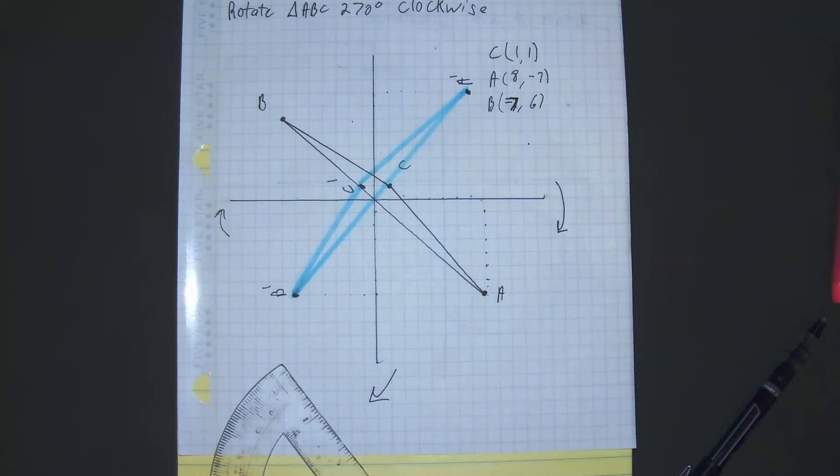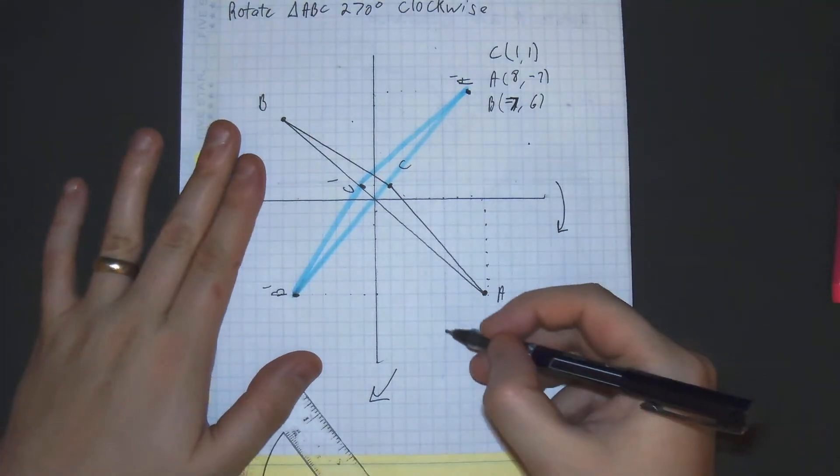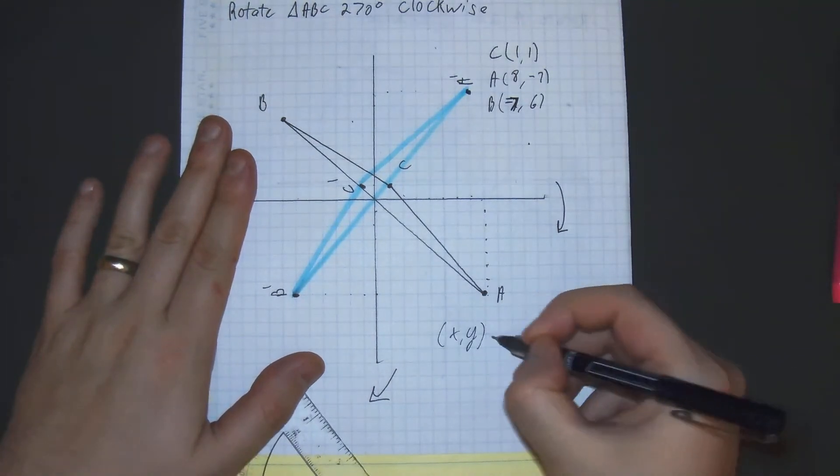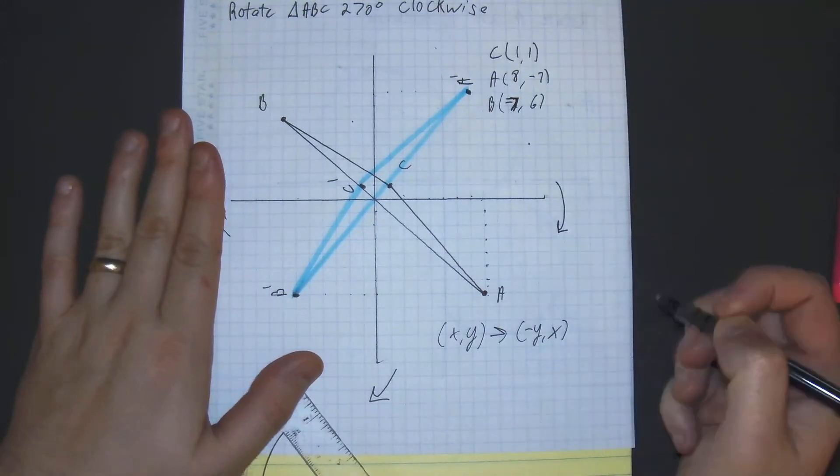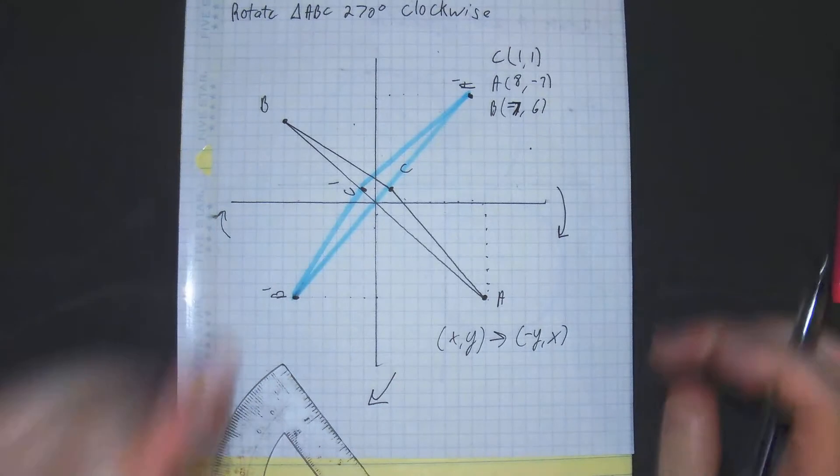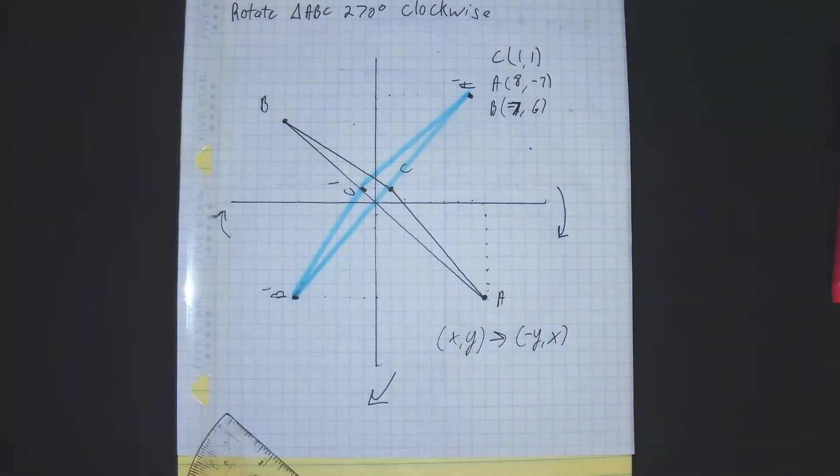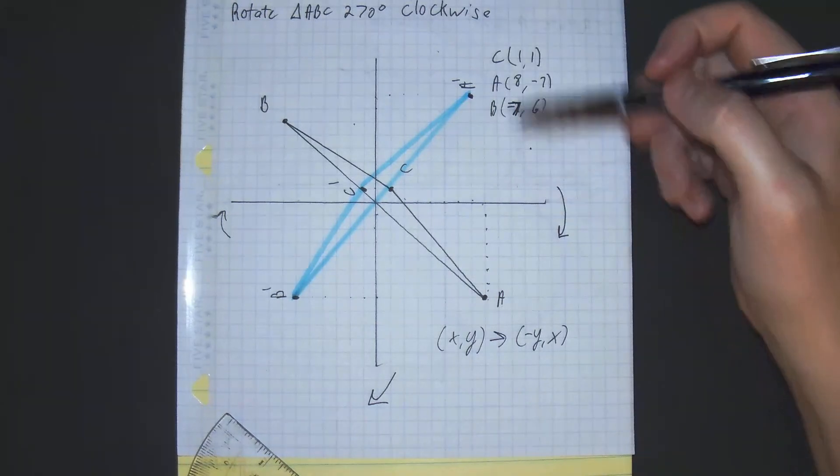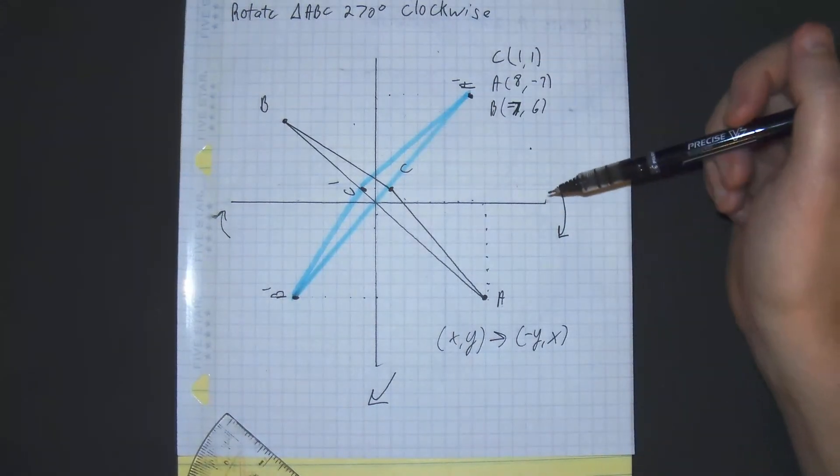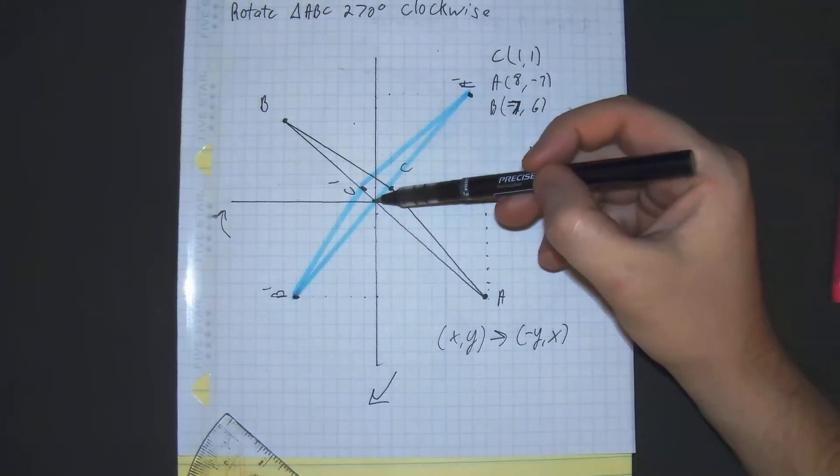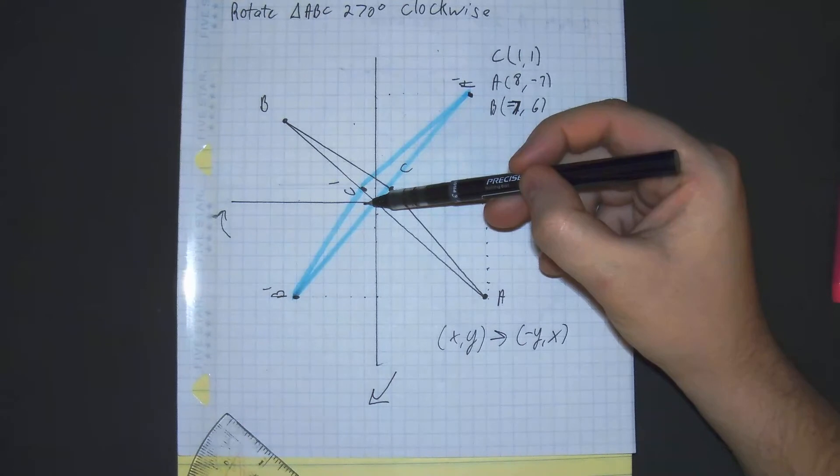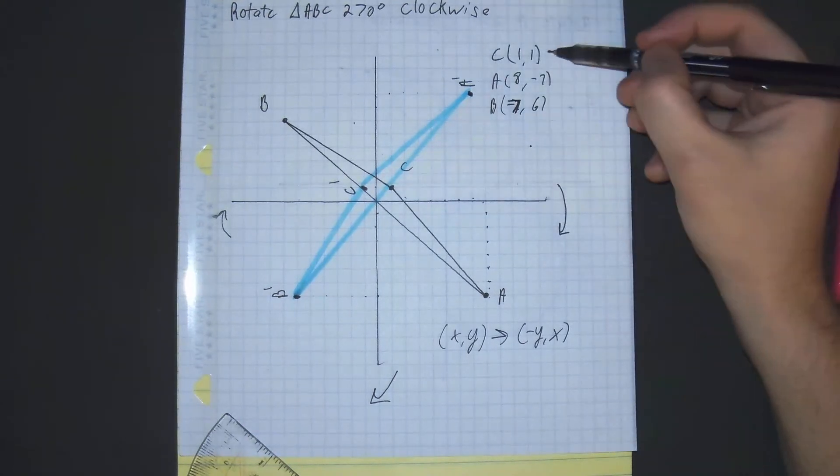Let's just double check everything. Let's see if we did it right. So the rules for this, x comma y, would become negative y, x for a clockwise rotation of 270. So let's check if we did it all right. So that means the front would become negative and the x value would stay the same. So negative 1, sounds right, up 1. So that's correct.